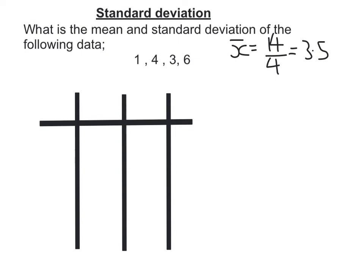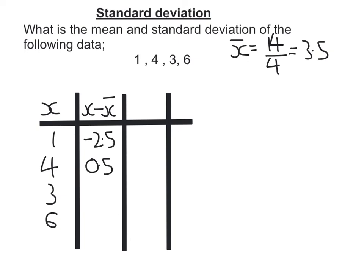To work out the standard deviation, I first set up a table with the column of data: 1, 4, 3, 6. Then I take away the mean of 3.5 from each. So 1 take away 3.5 is negative 2.5. 4 take away 3.5 is positive 0.5. 3 take away 3.5 is negative 0.5. And 6 take away 3.5 is 2.5. Checking these add up to 0 — yes, I'm on the right lines.